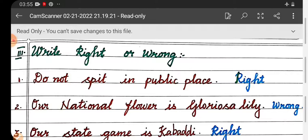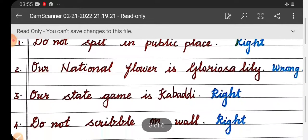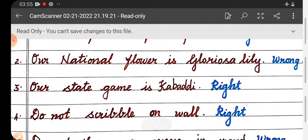Number two: Our national flower is Gloriosa Lily. Wrong. Number three: Our state game is Kabaddi. Right.